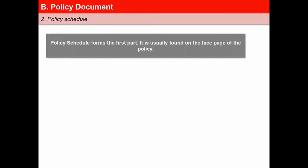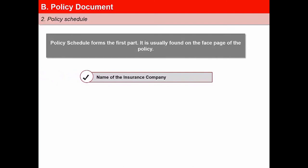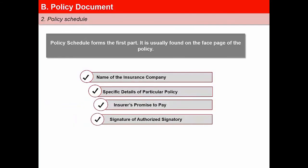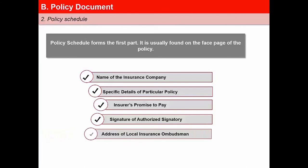The first part is the policy schedule, usually found on the face page of the policy. It normally contains: first, the name of the insurance company; second, specific details for the particular policy such as policy owner's name, address, date of birth, age, sum assured, name of nominee, mode of premium payment, etc.; third, the insurer's promise to pay, which forms the heart of the insurance contract; fourth, signature of the authorized signatory and policy stamp; and fifth, address of the local insurance ombudsman.